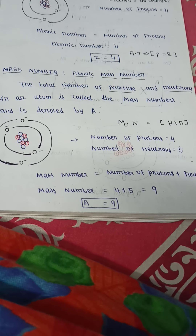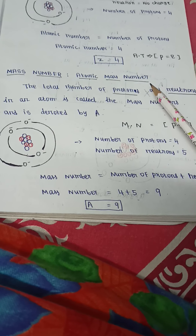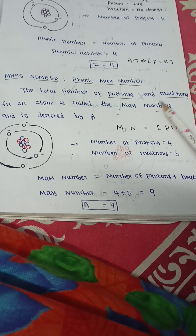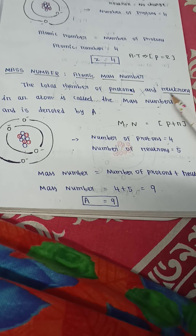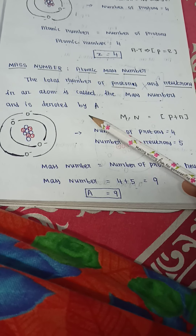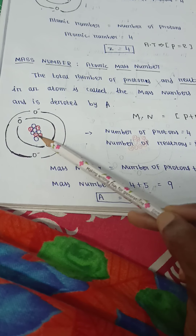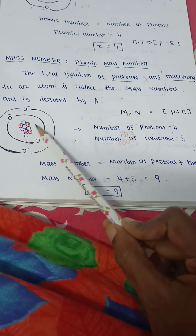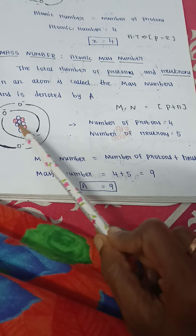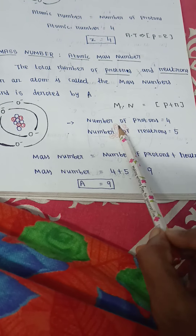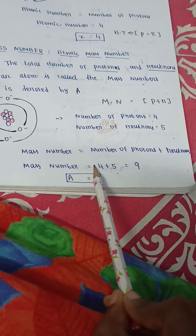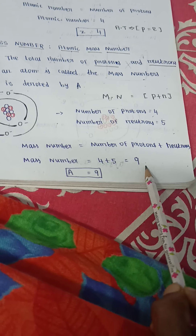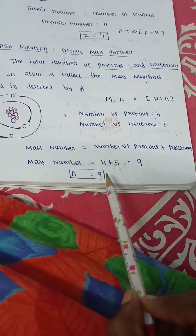Next, let's see the mass number or atomic mass number. The total number of protons and neutrons in an atom is called the mass number, denoted by A. For example, if we count the number of protons — 4, and number of neutrons — 5, then mass number A equals 4 plus 5 equals 9. So mass number is 9 and atomic number is 4.